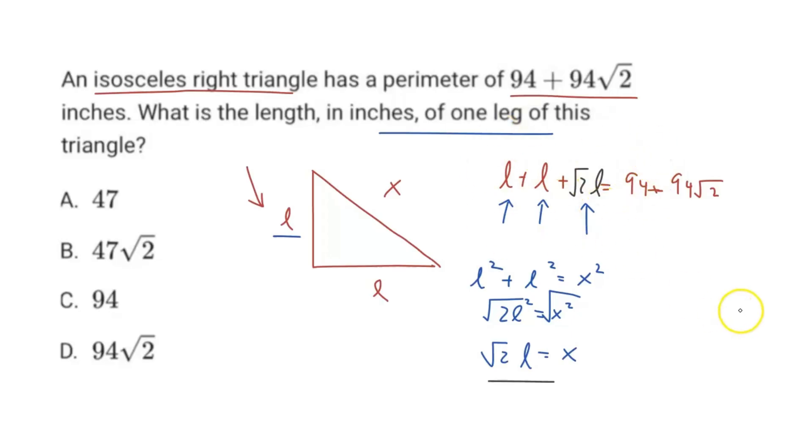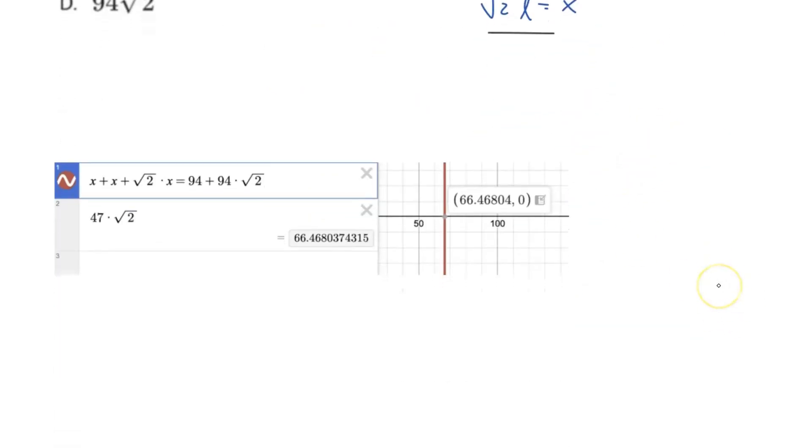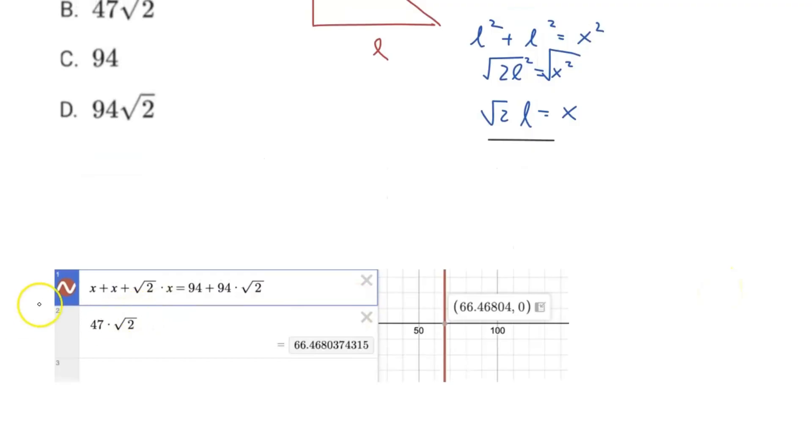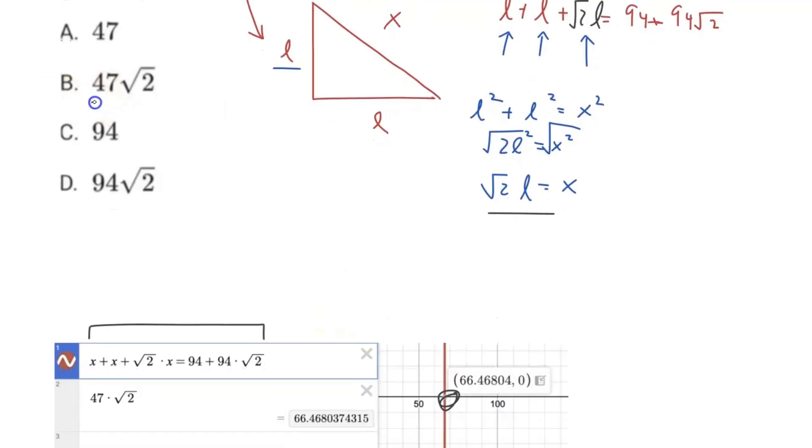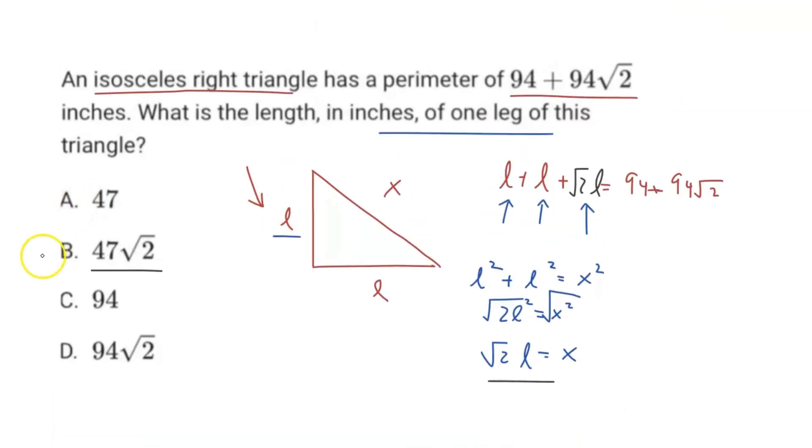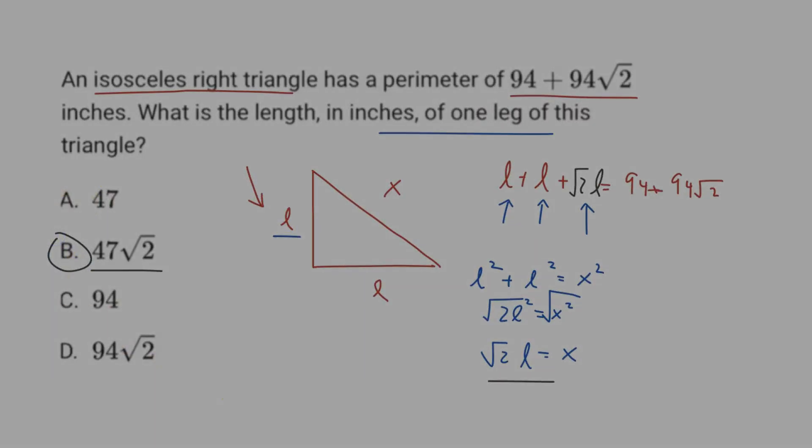So you can see down here, this is what I've done in Desmos. I've just put in what we had over here and found the solution, which is 66.46804. Looking at our answer choices, we can see it lines up with 47√2. 47√2 down here is also 66.468037. Therefore B must be our correct answer for that question.